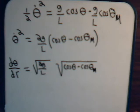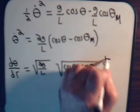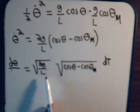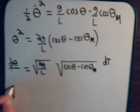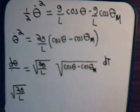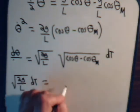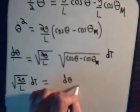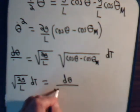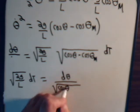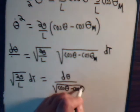Now let's multiply both sides of the equation by dt, cancel, and divide. We'll have the square root of 2g over l times dt equal to d theta divided by the square root of cosine of theta minus the cosine of theta maximum.